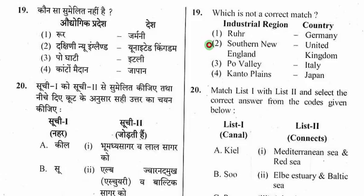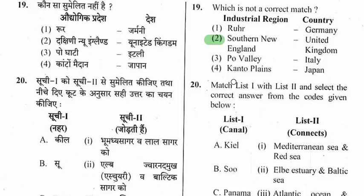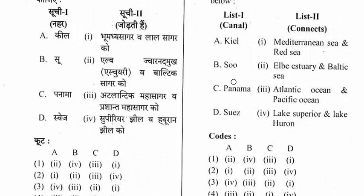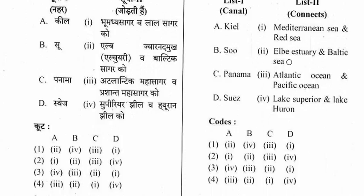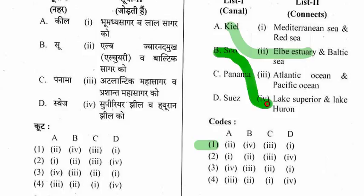Question 20: Match list 1 with list 2 — canals and what they connect. The right option is the first one. Kiel Canal connects the Elbe Estuary and the Baltic Sea. Soo Canal connects Lake Superior and Lake Huron. Panama Canal connects the Atlantic Ocean and the Pacific Ocean. Suez Canal connects the Mediterranean Sea and the Red Sea.